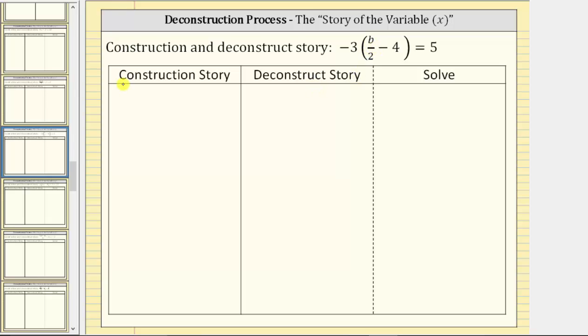So to write the construction story, we begin with the variable b. Looking inside the parentheses, we have b divided by two minus four. Remember, a fraction bar means division, and therefore the first step in the construction story is divide by two. If we divide b by two, this gives us the expression b divided by two.